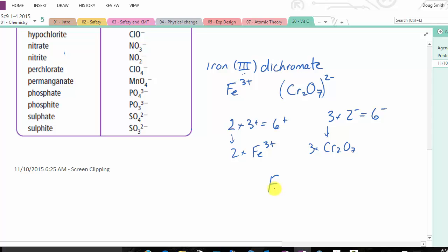So I need 2 of the irons and then 3 of these Cr2O7. I use the brackets because I make sure that the 3 relates to the whole thing. And that's naming polyatomic ions.